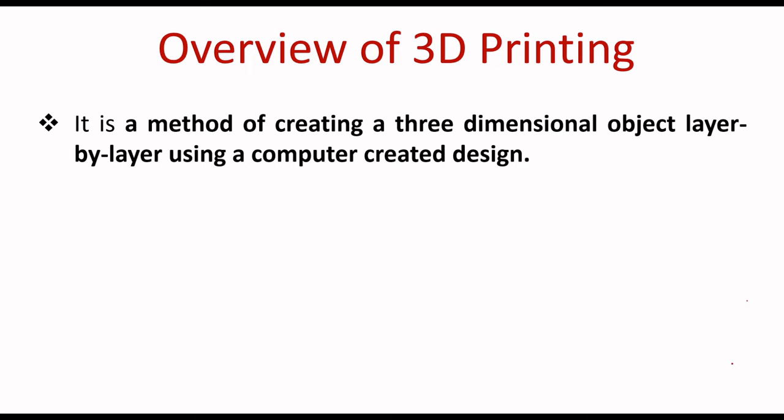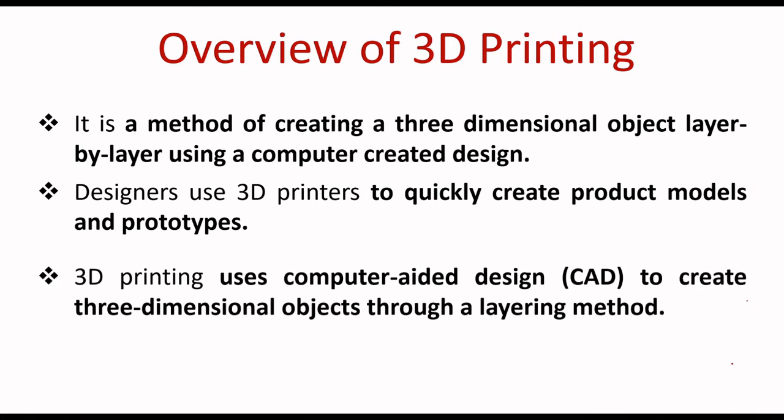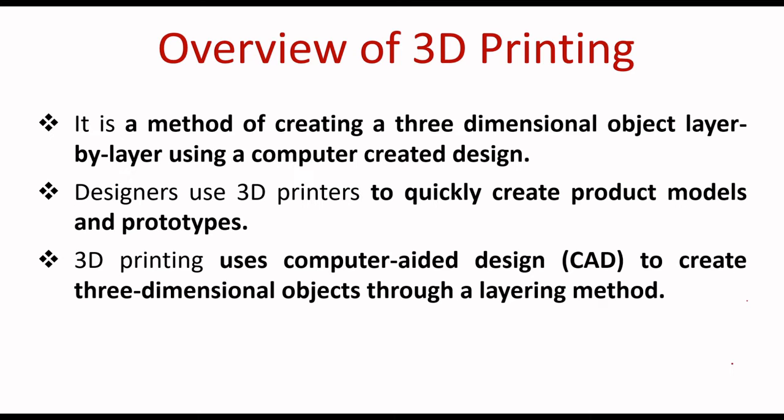The object is the end product. What is 3D printing used for? Designers use 3D printers to quickly create product models and prototypes. How does it work? 3D printing uses computer-aided design to create three-dimensional objects through a layering method. It may be in engraving or embossing format. It is an additive manufacturing model.